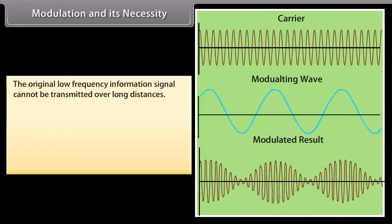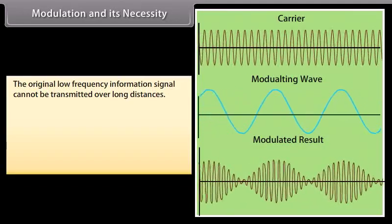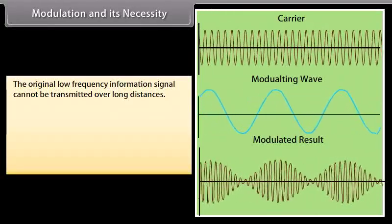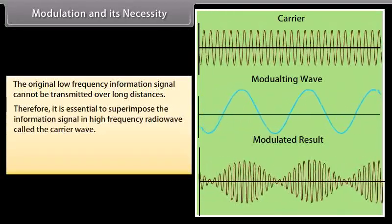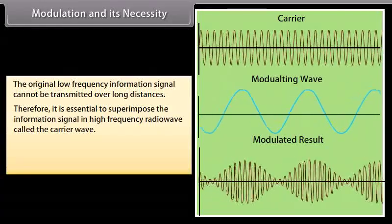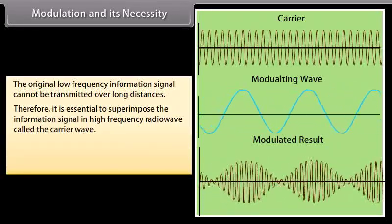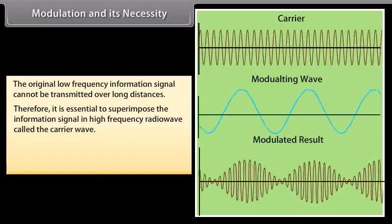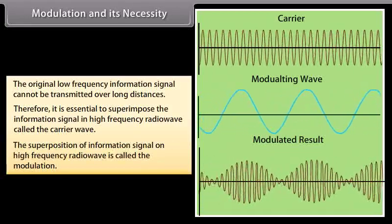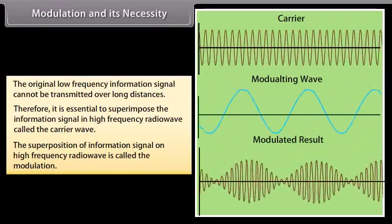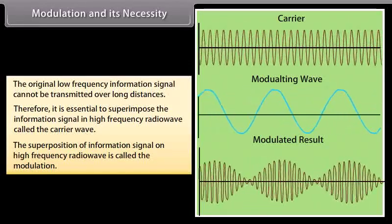The original low frequency information signal cannot be transmitted over long distances. Therefore, it is essential to superimpose the information signal on a high frequency radio wave called the carrier wave. The superposition of the information signal on a high frequency radio wave is called modulation.